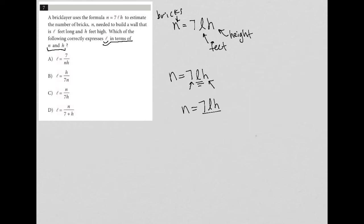I can divide by 7H. Doing so allows me to cross out the 7, cross out the H. But if I divide one side by 7H, I have to also divide the other side by 7H. So what I'm left with here is that N divided by 7H is equal to L.